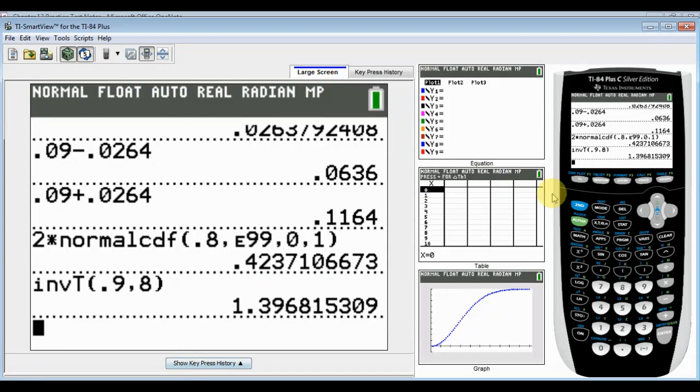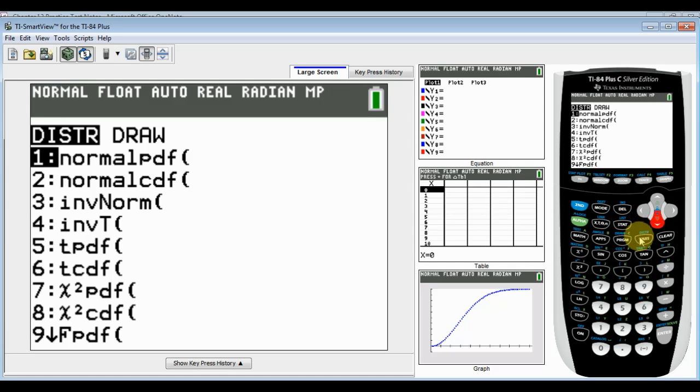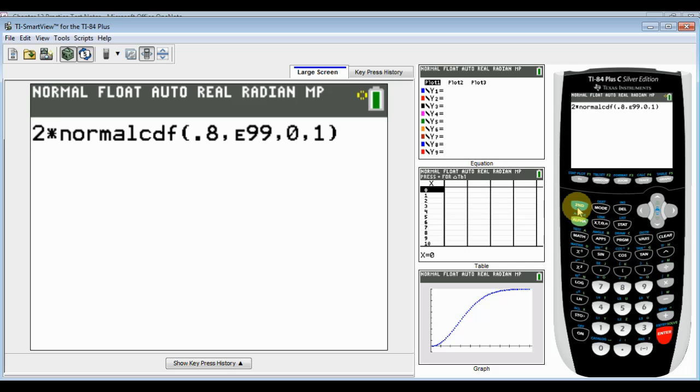Let's review that really quickly. How do we get 0.4237? Two times the probability that we're going from 0.8 to 1E99. I learned that you don't have to put the 1. You can just put E99. That'll save you one keystroke. You never know.